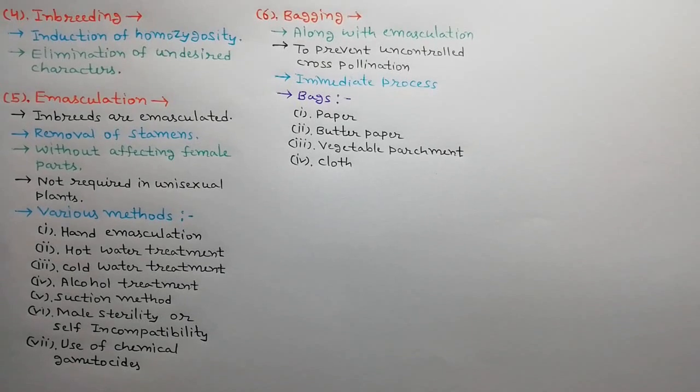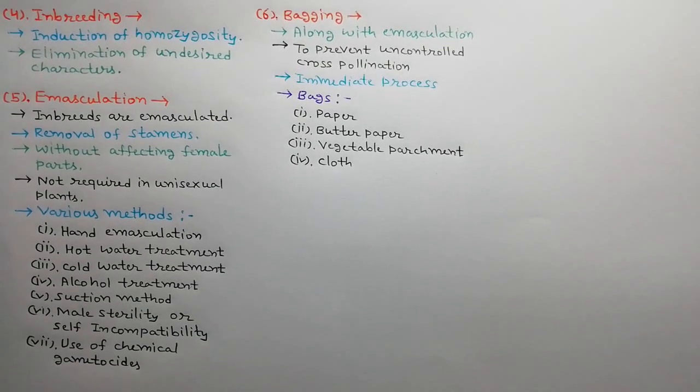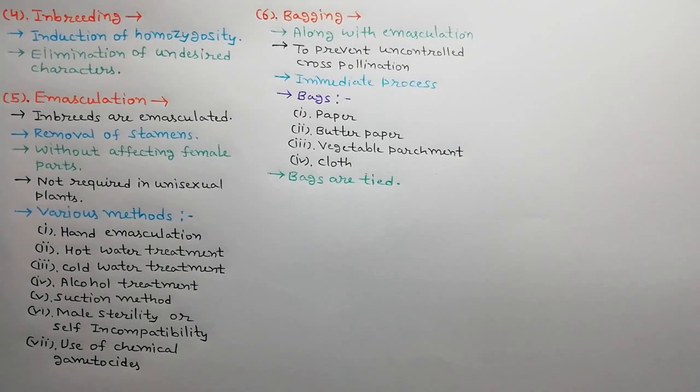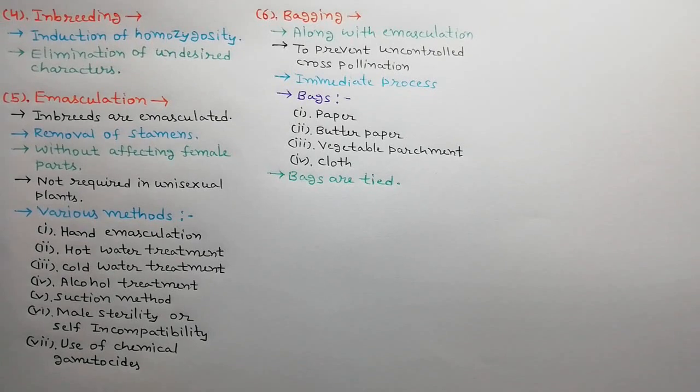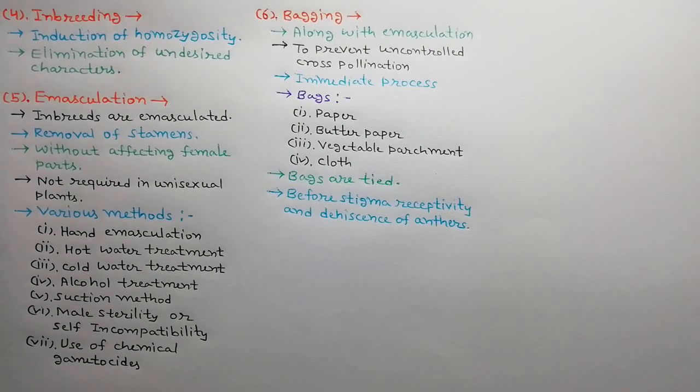The bags may be made of paper, butter paper, vegetable parchment, cloth, etc. The bags are tied to the base of the inflorescence or to the stalk of the flower with the help of thread, wire, or pins.